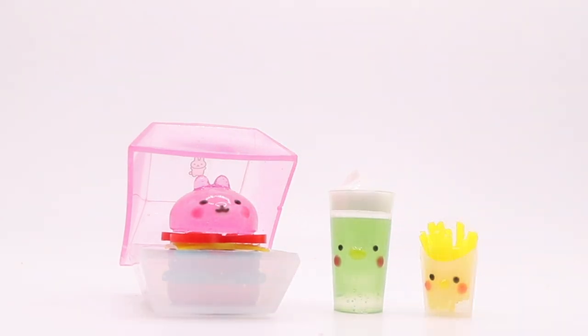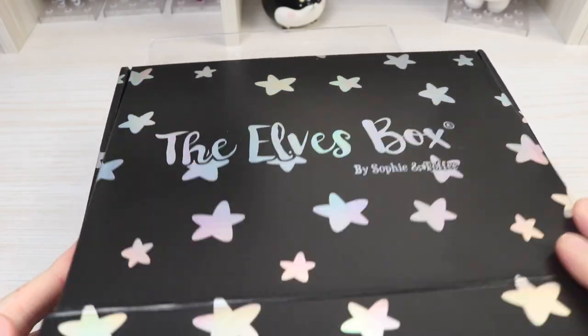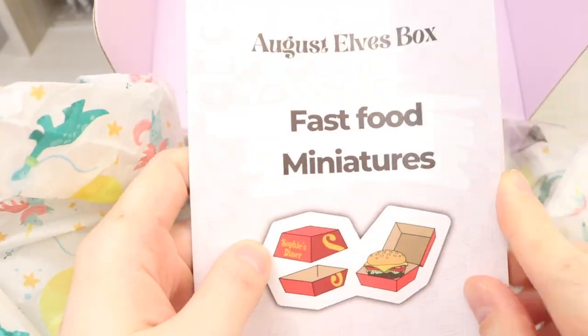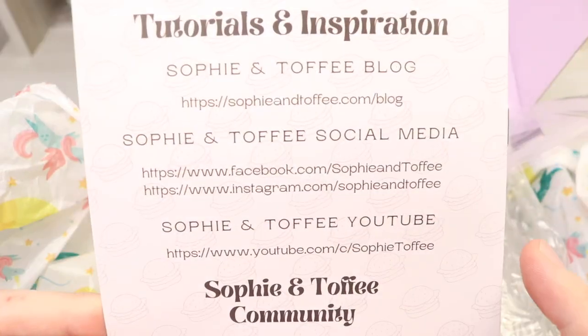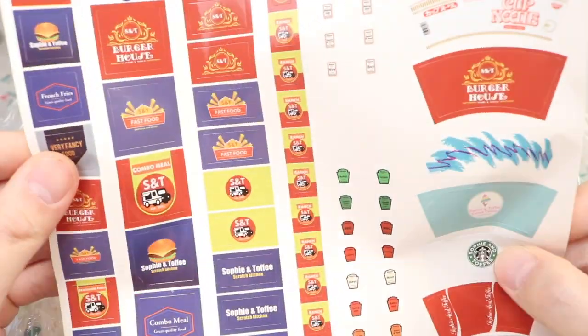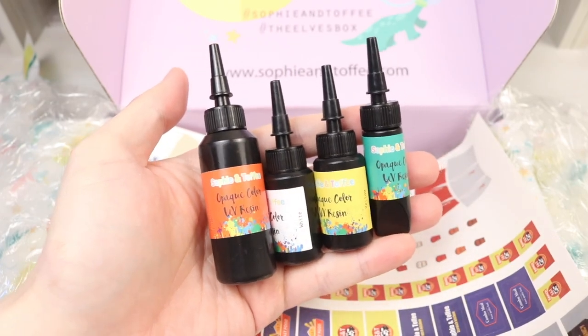And these are materials that I got from my Sophie and Toffee box. This is today's elves box, fast food miniatures, and I decided to make everything out of resin. So these are all the materials that we have inside the box.